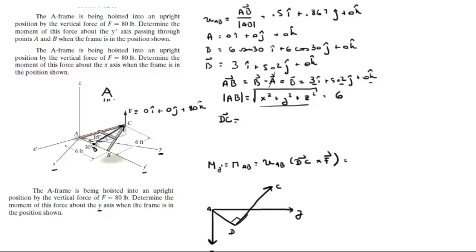As you can see, vector DC is going up and has a length of 6. Looking at it from straight up, we need the component of C. This vector has a length of 5.8, and forms a 30-degree angle with the x-axis. So that allows us to calculate the x and y components using that right triangle with hypotenuse 5.8 and 30-degree angle.